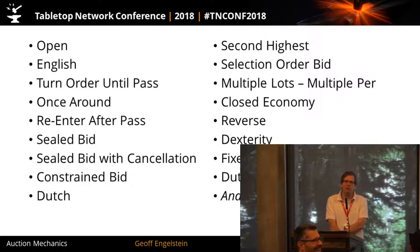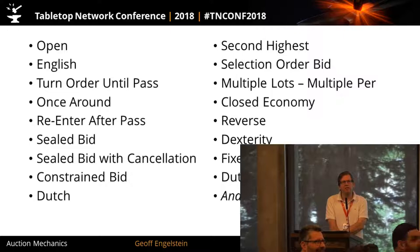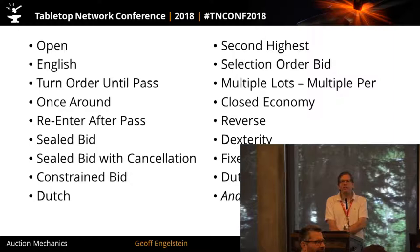How would you categorize the auction in Tom's 1846? It has a system where you pull cards out, pick one card, some are blanks, and you're taking turns taking cards out. That's more of a draft than an auction. Auctions are one of those things that can polymorph into a lot of different types of mechanics.